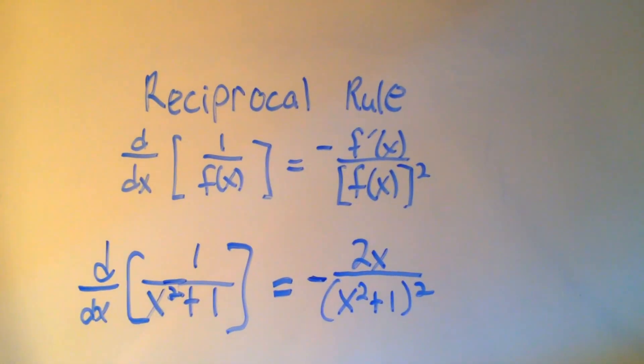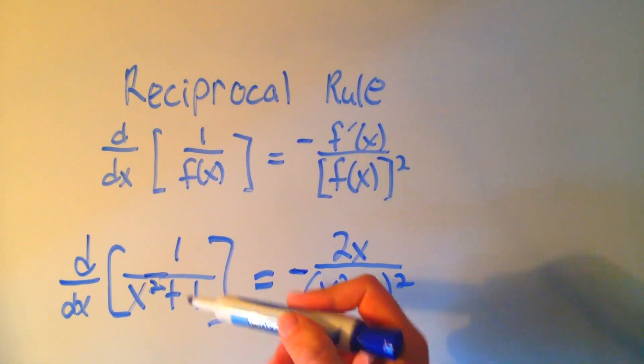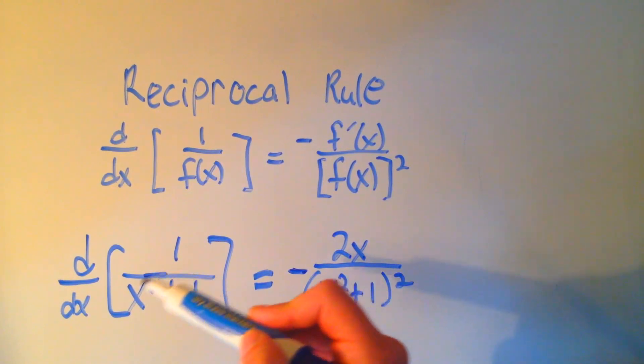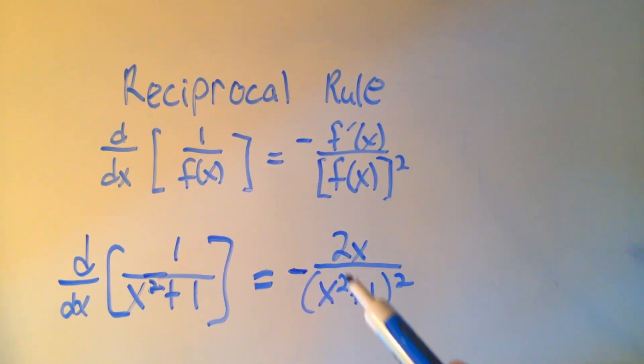Hopefully you can see that. So I write a minus sign, I take the derivative of the denominator and put it on top, and then I rewrite the denominator with a squared.